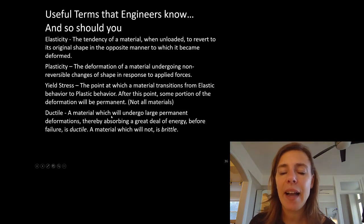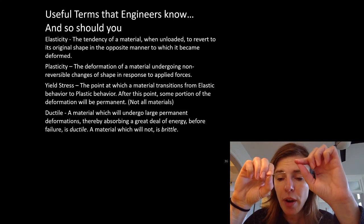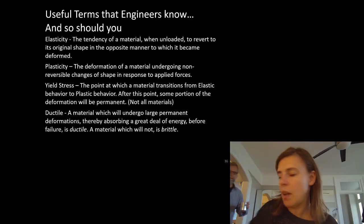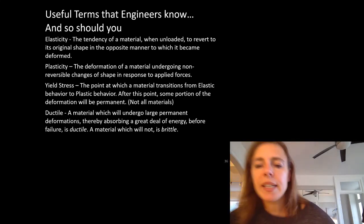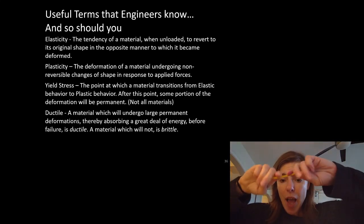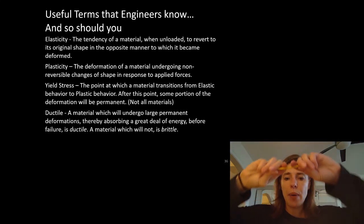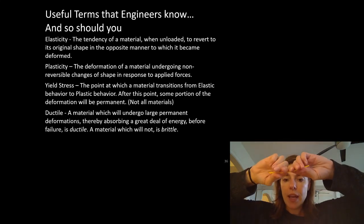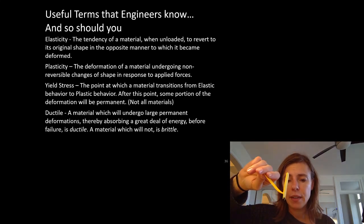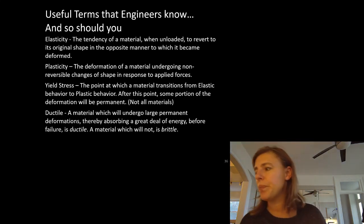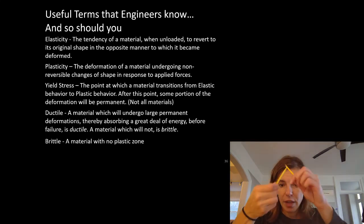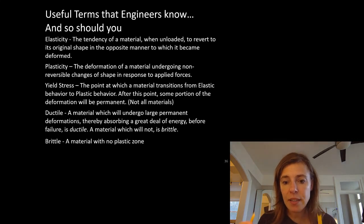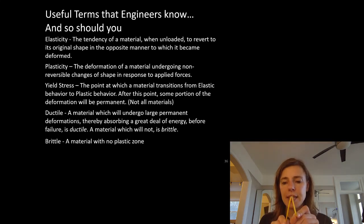Ductile is a material that can undergo large permanent deformations before it fails. I'm experiencing massive deformation with this paper clip, but the material hasn't completely failed — it still has capacity. That's because this is ductile. If it were made of wood, it would just snap. A popsicle stick: if I put deformation into it, there's elastic behavior — bend it, it goes back. But if I go past a certain point, I yield it — I failed the popsicle stick. That popsicle stick was brittle — there was no yielding zone. When I hit the end of its elastic linear zone, it failed.